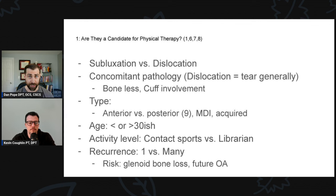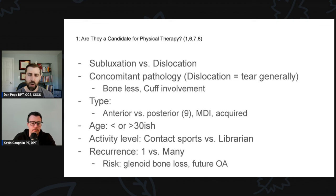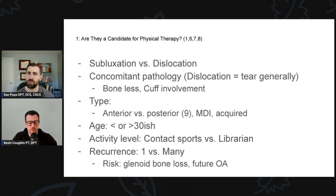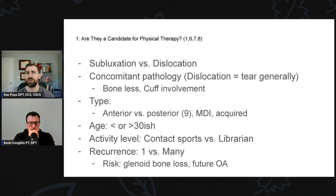Do they have any concomitant pathology? If you fully dislocate, you probably have a Bankart tear, which likely needs surgical fixation. Is there any bone loss or cuff involvement? These things will dictate whether surgery is needed. There's also research looking at anterior versus posterior instability: folks with posterior instability tend to do better conservatively, whereas those with anterior instability tend to have more recurrences and things like osteoarthritis over time. Multi-directional and acquired instability also tend to do better with physical therapy.